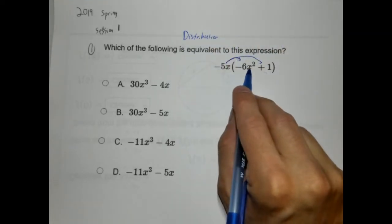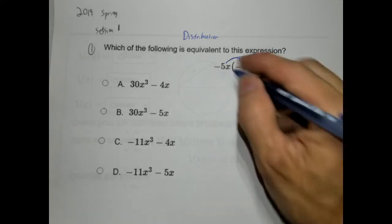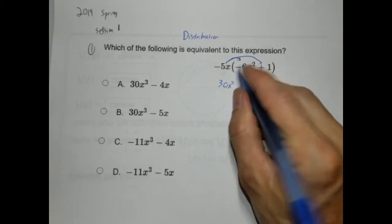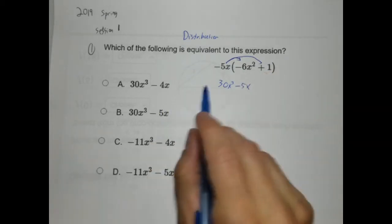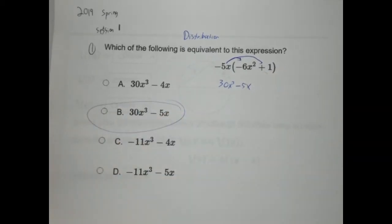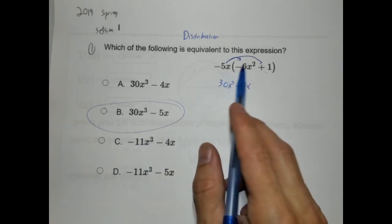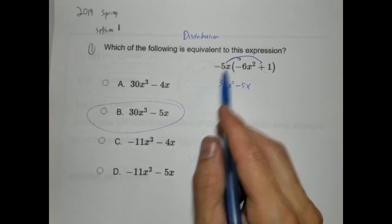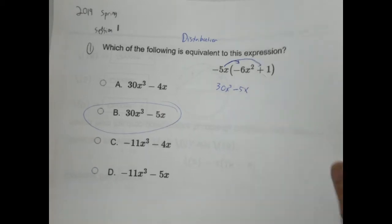So -5x times -6x². It's also asking us if we know our exponential rules. -5 times -6 is positive 30. And then x times x² is x³, because we add our exponents. Then -5x times positive 1 would be -5x. Here you can tell what they wanted you to do is add the 5 and the 6. See why we have -11, because -5 plus -6 is -11. That's why these options are here. For students that don't know how to distribute and they want to add, that's where they're going to circle. We have to remember how to distribute. Distribution is just multiplication.